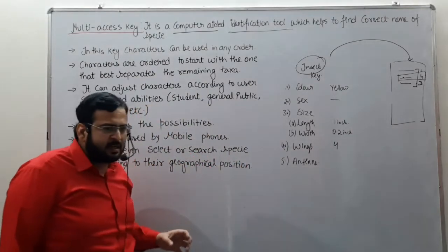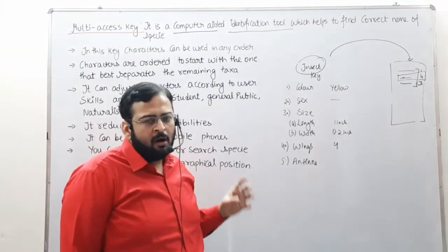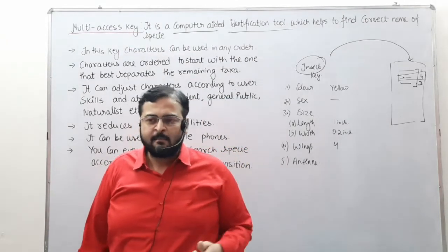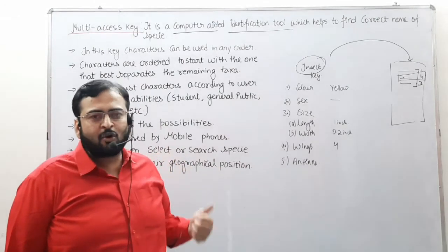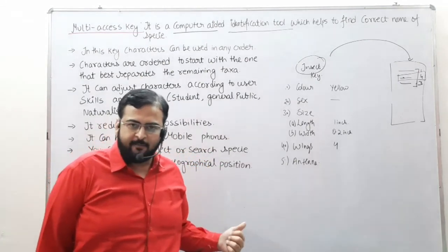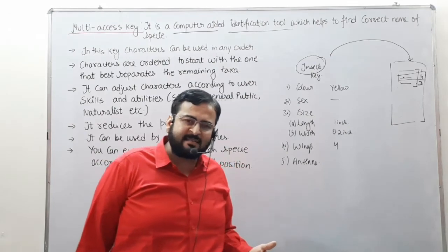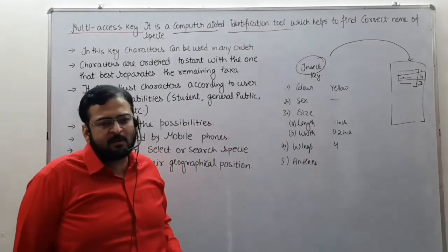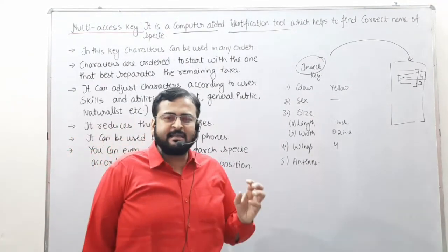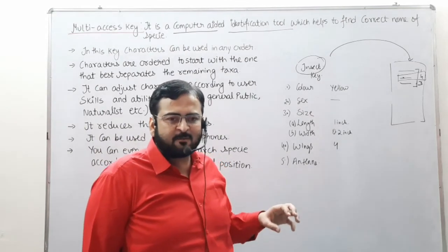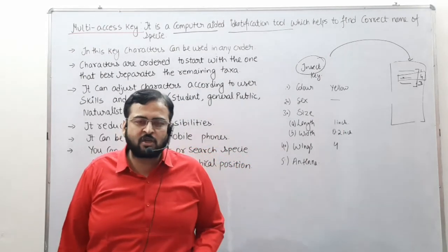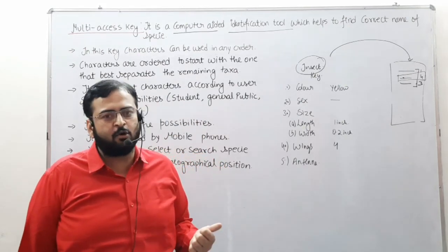This is how this key helps you identify any plant or animal. However, such keys are not yet widely developed because research is still ongoing. For example, it has been developed for French ladybird, but data for many species still needs to be recorded. Once that is done, it will be very easy for everyone to recognize any particular plant, animal, or species and find out its details. Hope you understood this lecture on the multi-access key. Thank you.